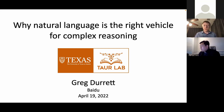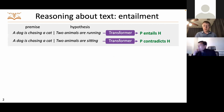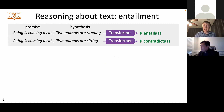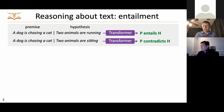Today I wanted to talk about tasks involving complex reasoning and why natural language is the right way to address them. To start off and motivate this talk, I'll begin with the task of textual entailment. With the popularity of benchmarks like BLUE, we've seen this task a lot lately. We have a premise like 'a dog is chasing a cat' and a hypothesis like 'two animals are running,' and a pre-trained transformer model, if fine-tuned on suitable data, can correctly judge that the hypothesis is entailed or contradicted by the premise.